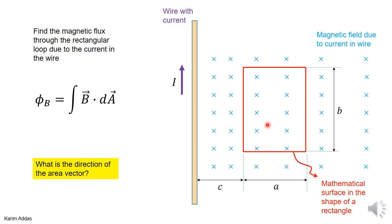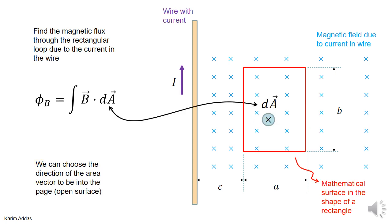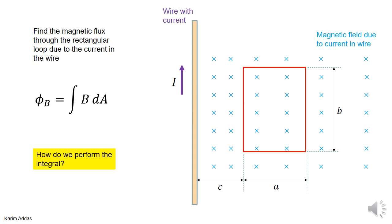Remember, if this is an open surface, you need to define the area vector to be either into the page, perpendicular to the surface into the page, or out of the page. Since the magnetic field is already into the page, then let's just put the area into the page too, so that when you get B dotted into the area vector, the dot product becomes just B dA.